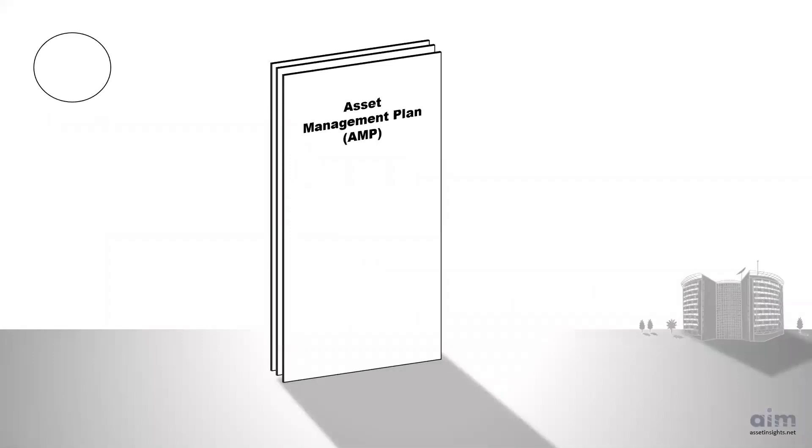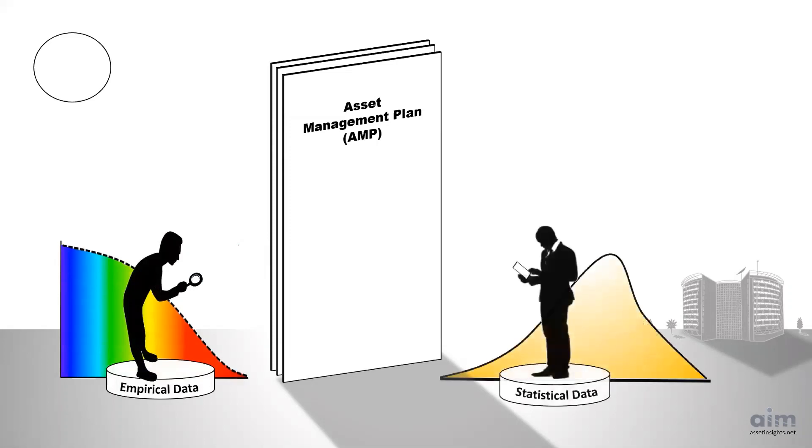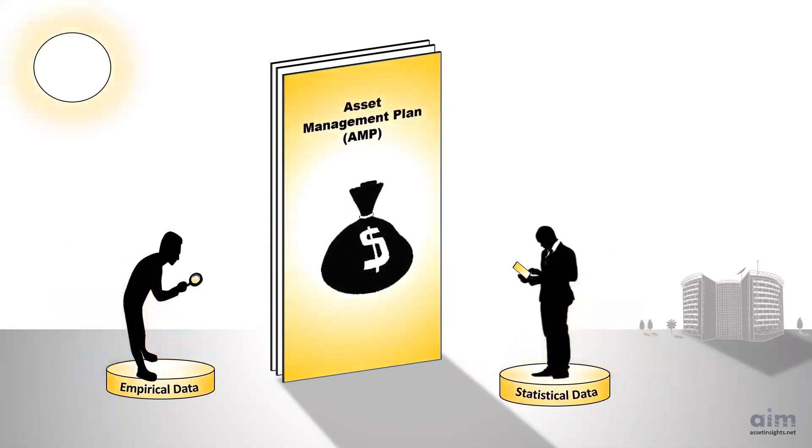It is the combination of empirical data for evidence-based condition and statistical data for age-based condition that renders a robust and defensible financial forecast for the organization. At the end of the day, an asset management plan needs an optimized balance of empirical and statistical data.